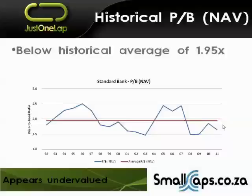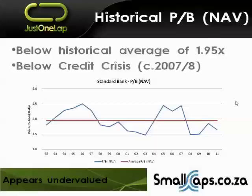The historical average is 1.95 — you can almost round that up to two. The current price-to-book of Standard Bank is below the red line, the long-term average. We are essentially able to buy the business on a lower liquidation multiple — buying it historically cheaper than its assets have traded in the market. We're buying it below the credit crisis price of 2007-8, and it's still recovering after that period.